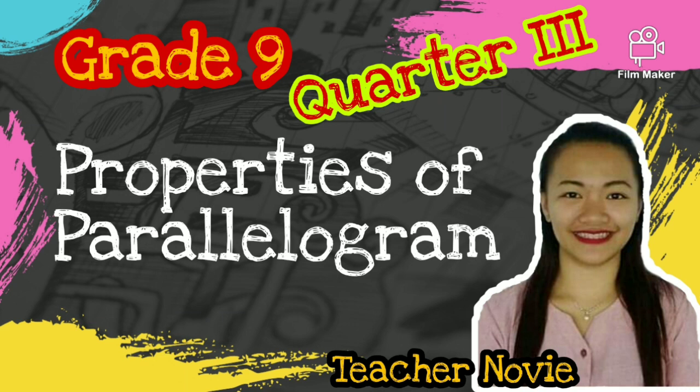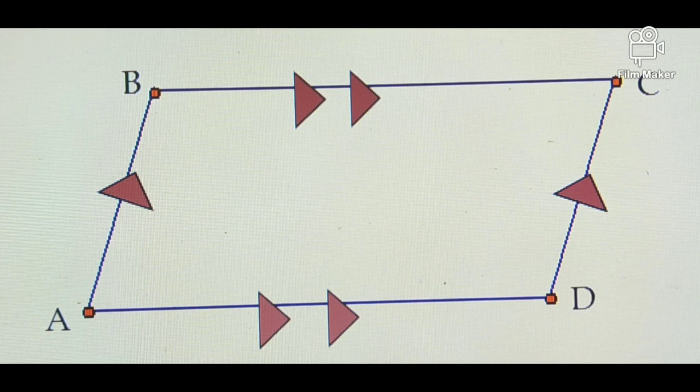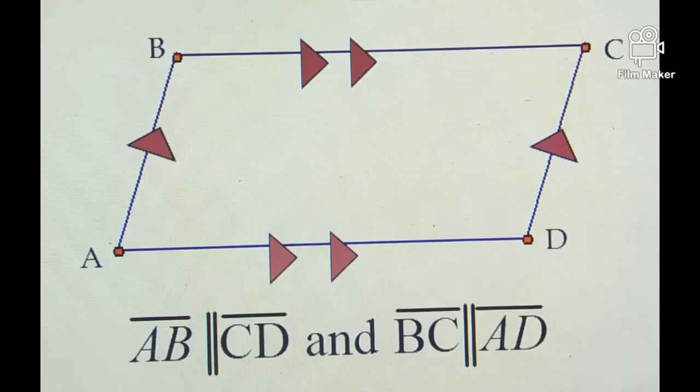Before we proceed to the properties, let us first define a parallelogram. Parallelogram is a quadrilateral whose opposite sides are parallel. This figure is a parallelogram because line segment AB is parallel to CD and side BC is parallel to AD.